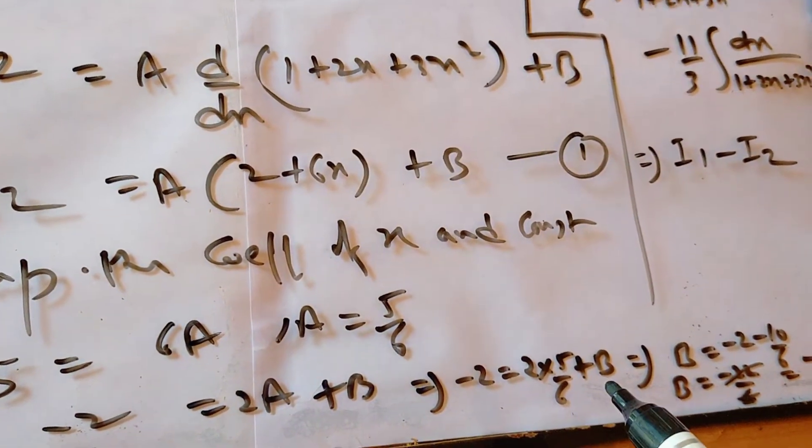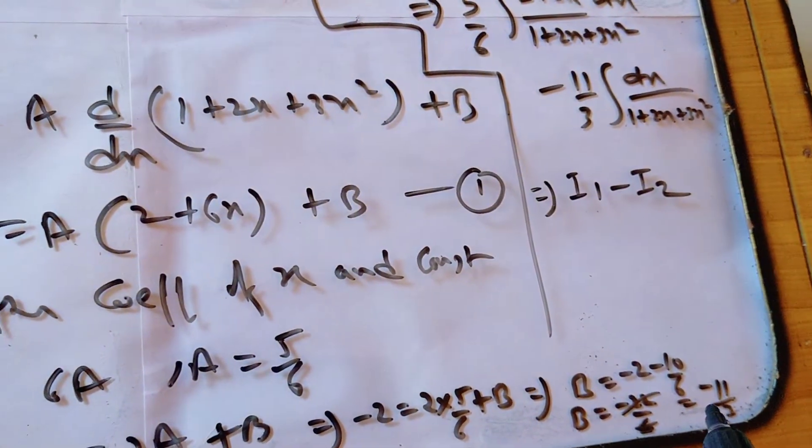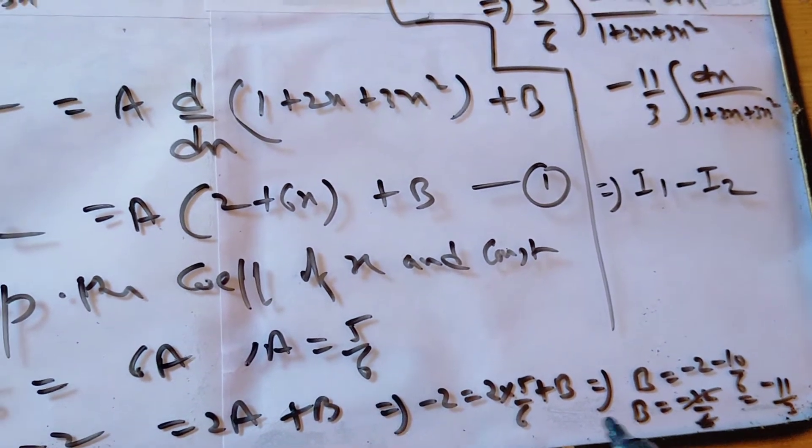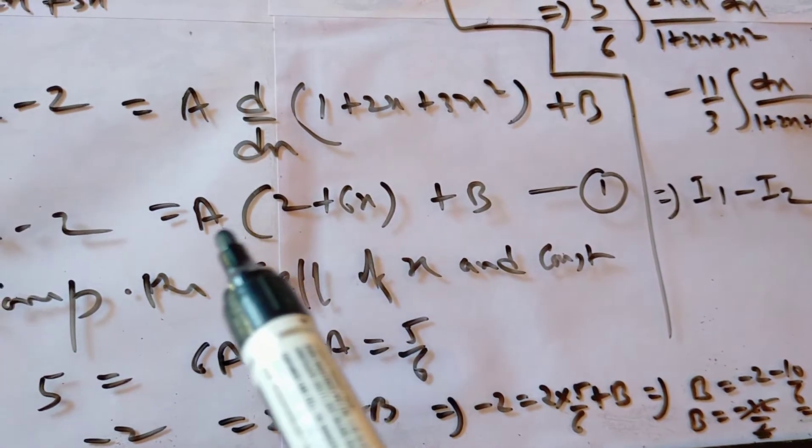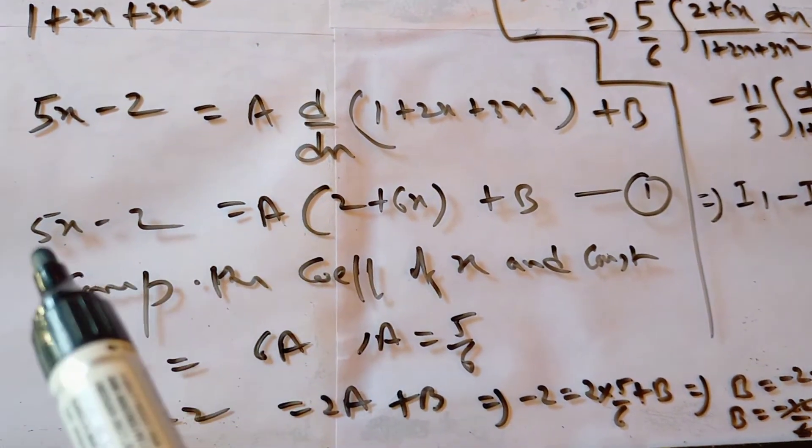From here we are getting the value of B, it is minus 11 upon 3. So A also got 5 by 6, and B also got minus 11 by 3. Now we substitute A and B value in equation number 1. We will substitute this in 5x minus 2, we will substitute A and B value.